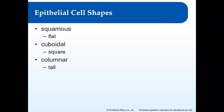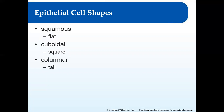Epithelial cells are categorized by shape. Squamous cells are flat — I remember squamous as 'squashed.' Cuboidal cells are exactly like they sound: cube-shaped, kind of squared off. And columnar cells also sound like what they are — they look like little columns, taller than they are wide.